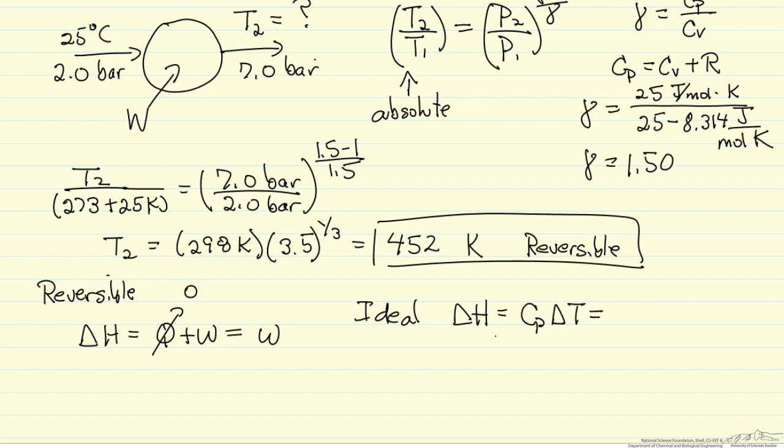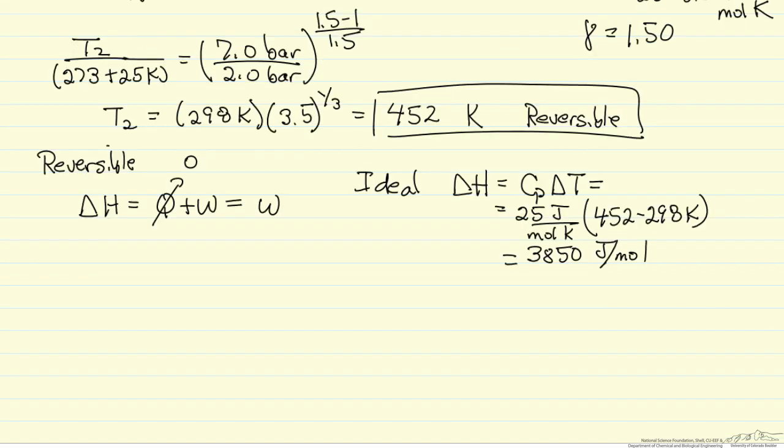Now let's put the numbers here: 25 joules per mole Kelvin, delta T, the final temperature minus the initial temperature in Kelvin. We end up with 3850 joules per mole. So this is delta H for the gas, and therefore this is the work, and this is positive because we have done work on the system.